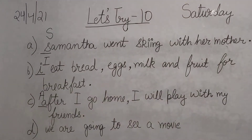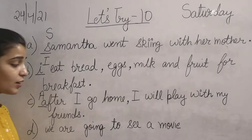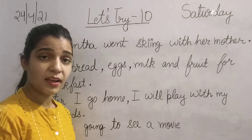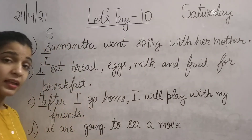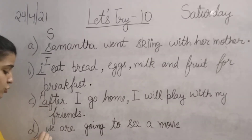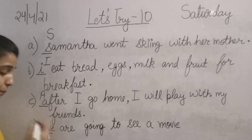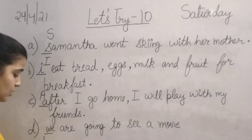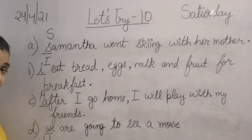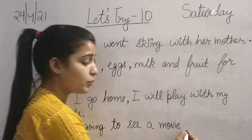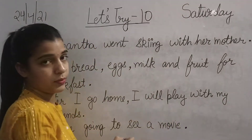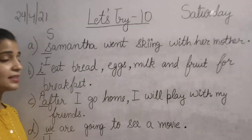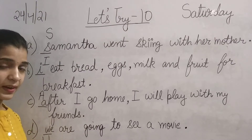The next sentence is: 'We are going to see a movie.' Ham kahan ja rahe hain? Movie dekhne. The first letter W should be capital, and at the end we will put a full stop. All these sentences are correct.